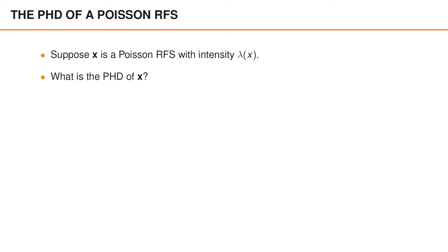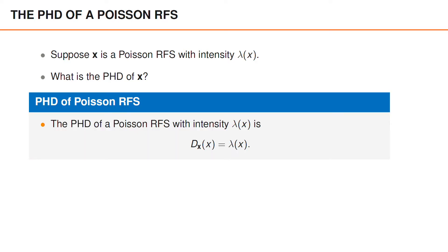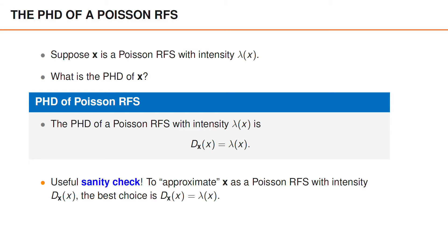It is also interesting to consider Poisson point processes in this context. Suppose the random finite set boldface x is a Poisson point process with intensity function lambda of x. The PHD of this random finite set is simply lambda of x. It would, of course, be strange to refer to the PHD as the intensity function if it did not coincide with the intensity function when the random finite set is a Poisson point process. You can also view this as a sanity check of what we are trying to do here.